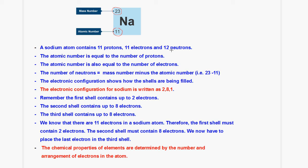In order to calculate the number of neutrons present in this atom, you take 23 and subtract 11, and that is how we get 12 neutrons. So the atomic number is equal to the number of protons, and also equal to the number of electrons. The number of neutrons is equal to the mass number minus the atomic number — in this case 23 minus 11 gives us 12.